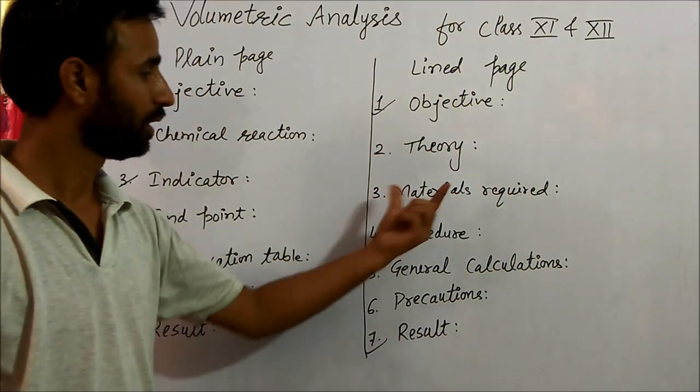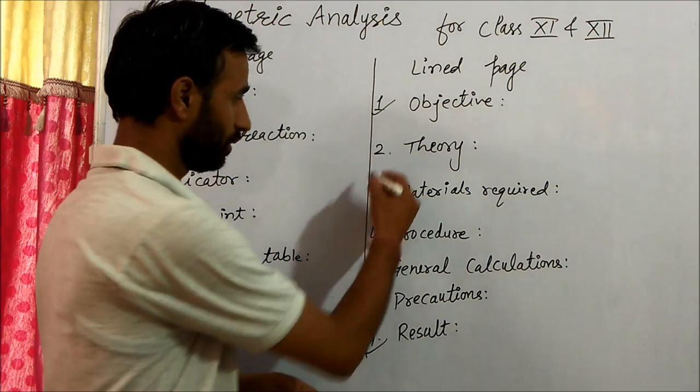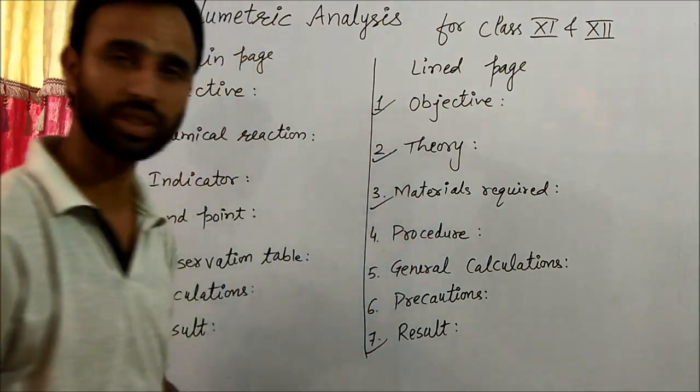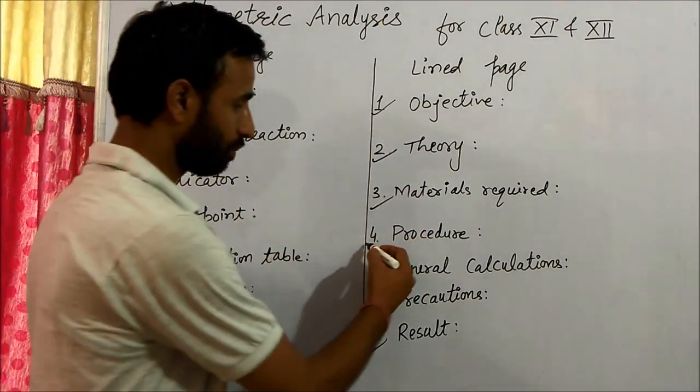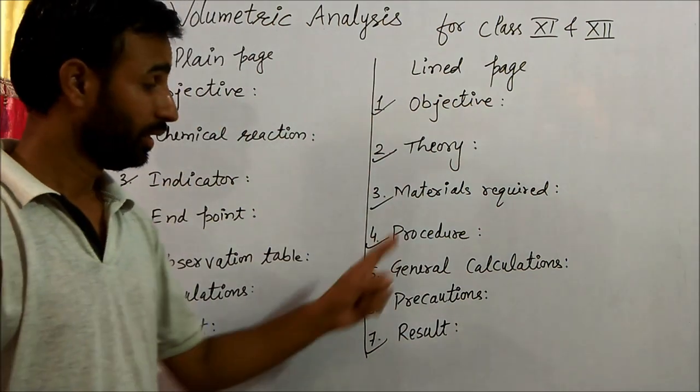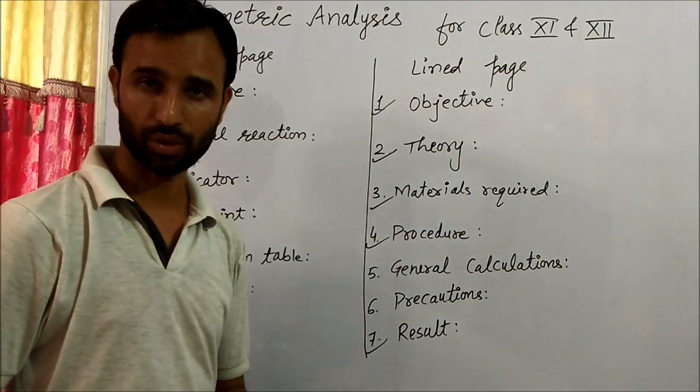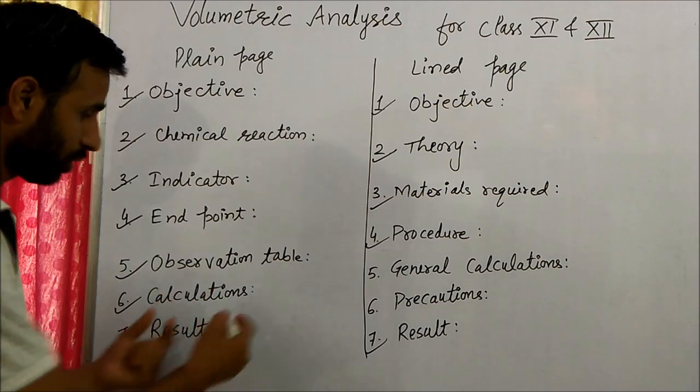Materials required. After theory, you write materials required, and then your procedure. General calculation comes on the lined page, actual calculation on the plain page.